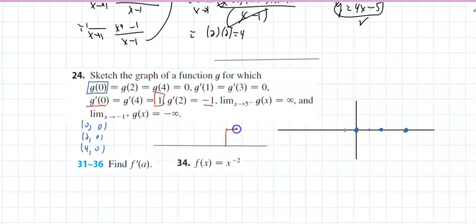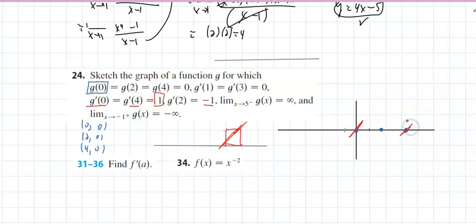If I draw a square — rise 1, run 1 — that's what a slope of 1 looks like. So at x=0 the tangent looks like this, and at x=4 it looks like that as well. At x=2, the slope of the tangent is negative 1 — something that looks like this.